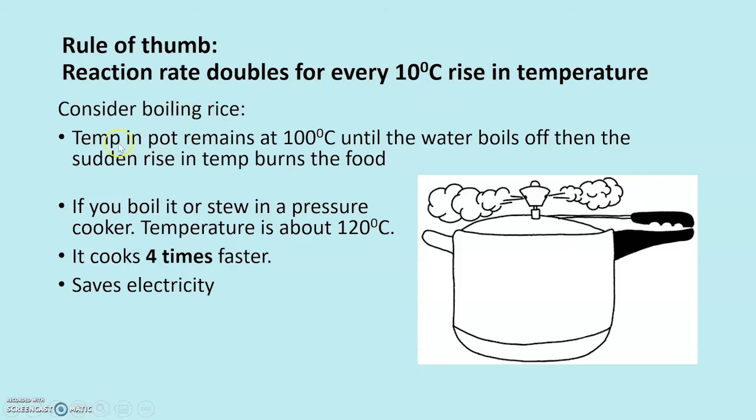Let's consider boiling rice. The temperature in the pot remains 100 until all the water boils off, and then there's a sudden rise in temperature that causes the food to burn. If we use, however, a pressure cooker to cook our rice or stew or whatever it is, the temperature in here is about 120 degrees. Well, to double this, you need to get to 110 and double it again 120 according to this rule. So you're cooking things at four times the speed. It's four times faster in a pressure cooker and thus you're saving electricity.